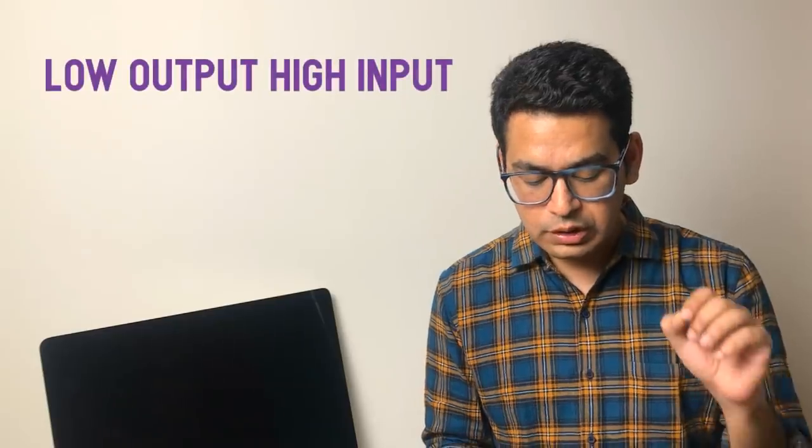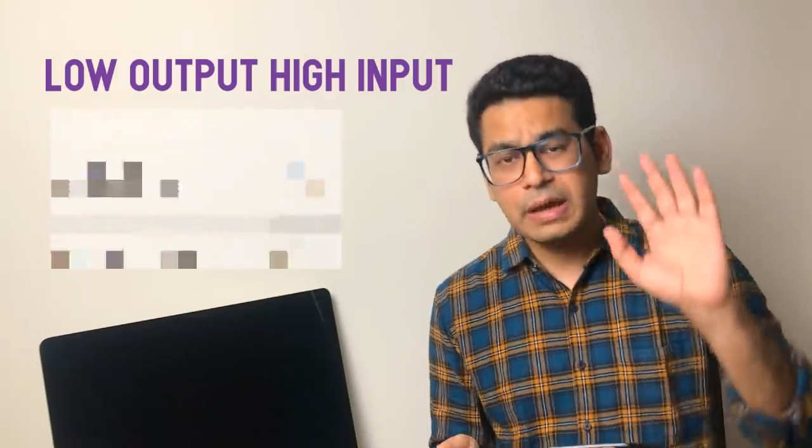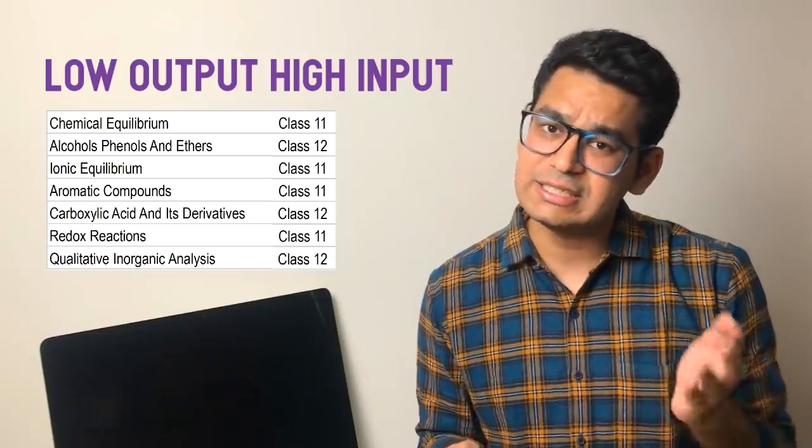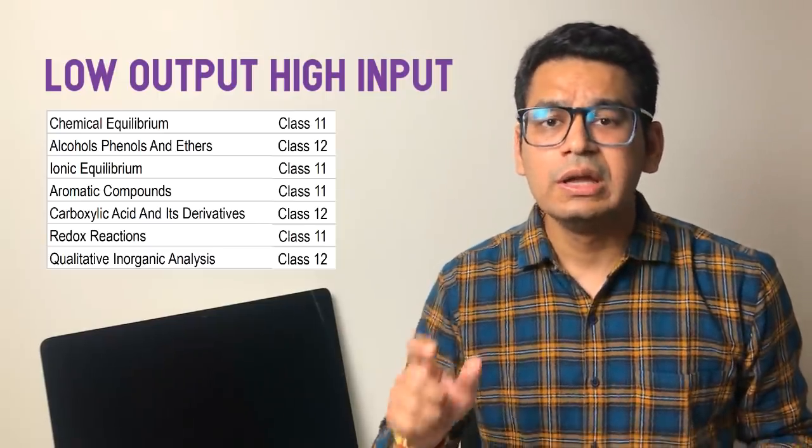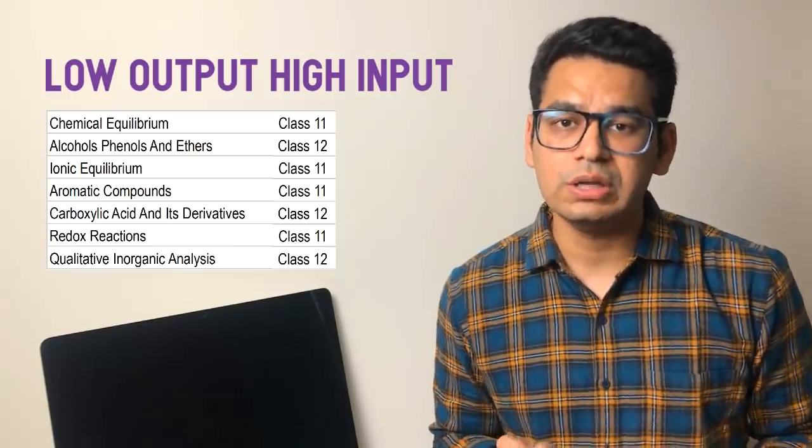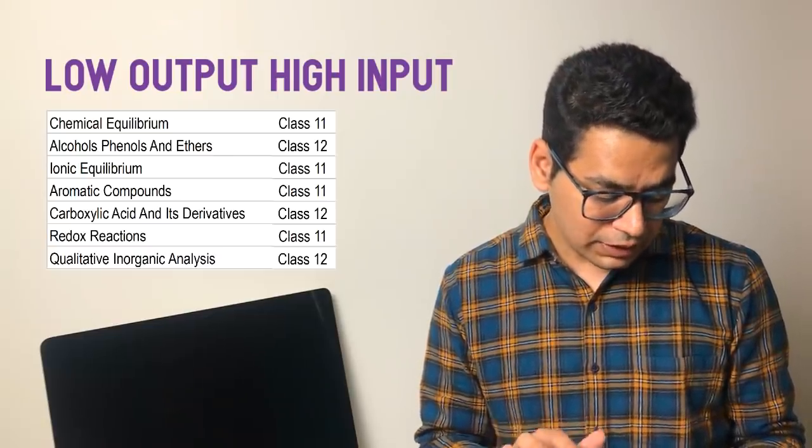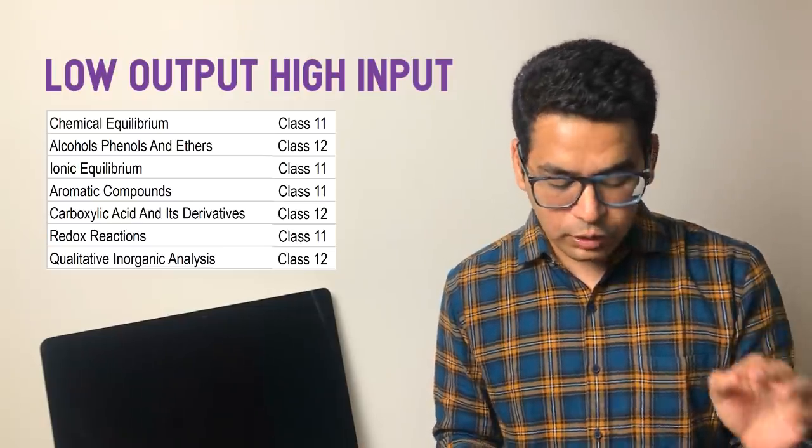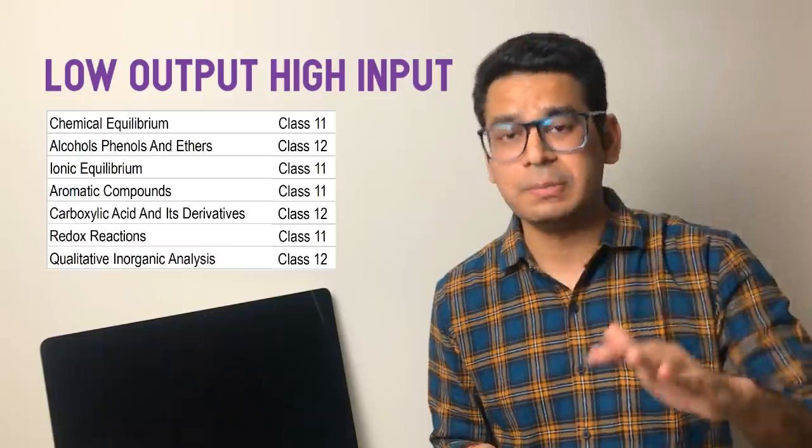And the last category is low output, high input. Meaning chances of questions coming are less and they will also take more of your time. Like chemical equilibrium - if I talk about chemical equilibrium, it's such a topic that it may go into low output low input in some year, and in some year go into low output high input. Why is chemical equilibrium called high input? It's not necessary that the concepts are very difficult - concepts are limited, but tricky questions are expected from it. So difficulty level, if you see for chemical equilibrium, you will generally find it high, not low. Similarly alcohol phenol ether - it's a very big chapter, but the probability of questions coming from it is not as high as how big the chapter is.